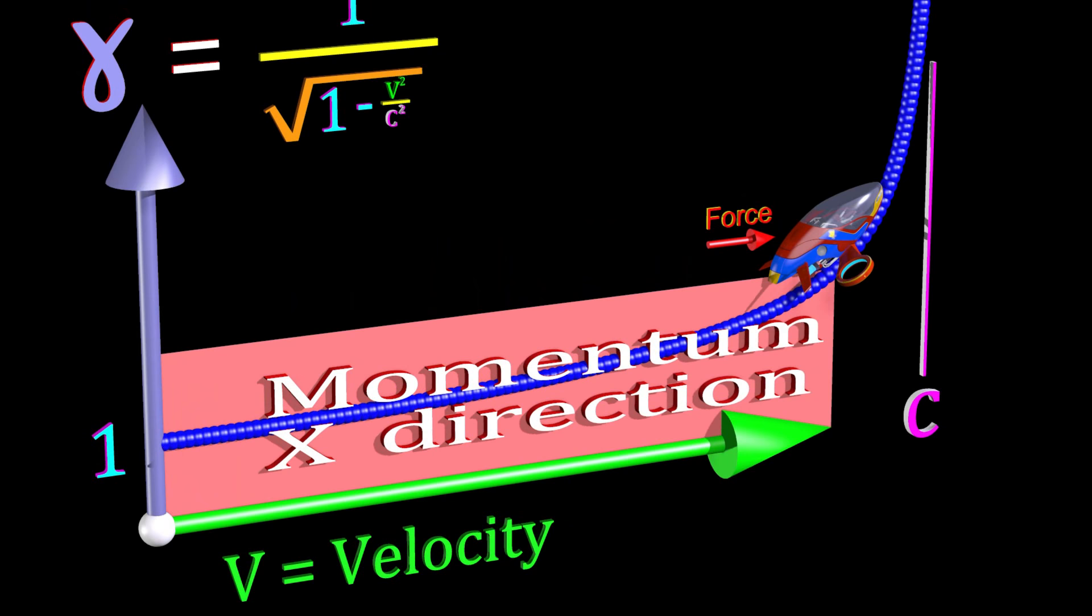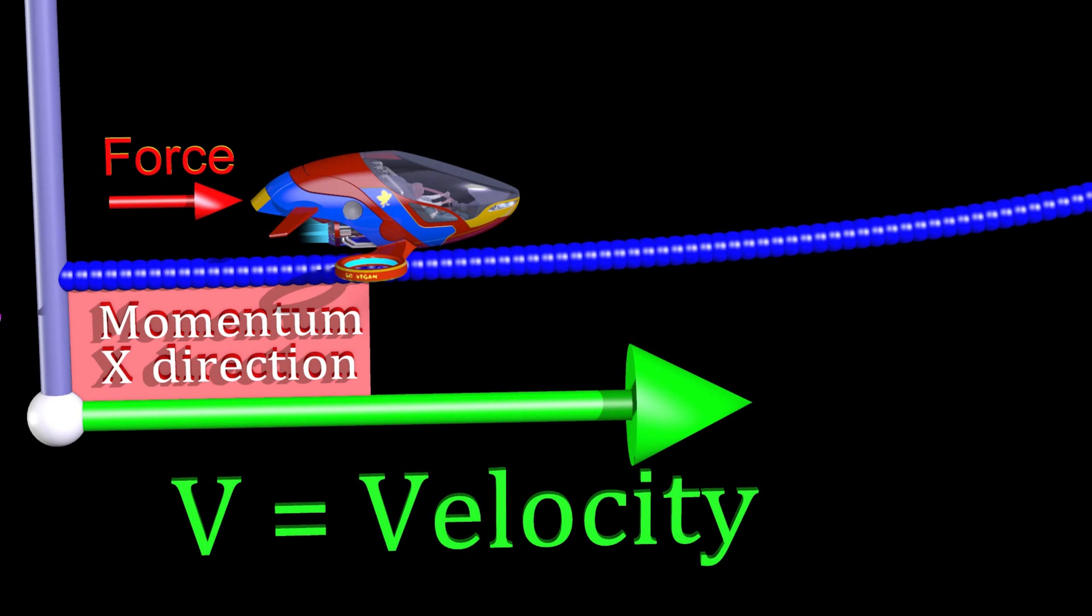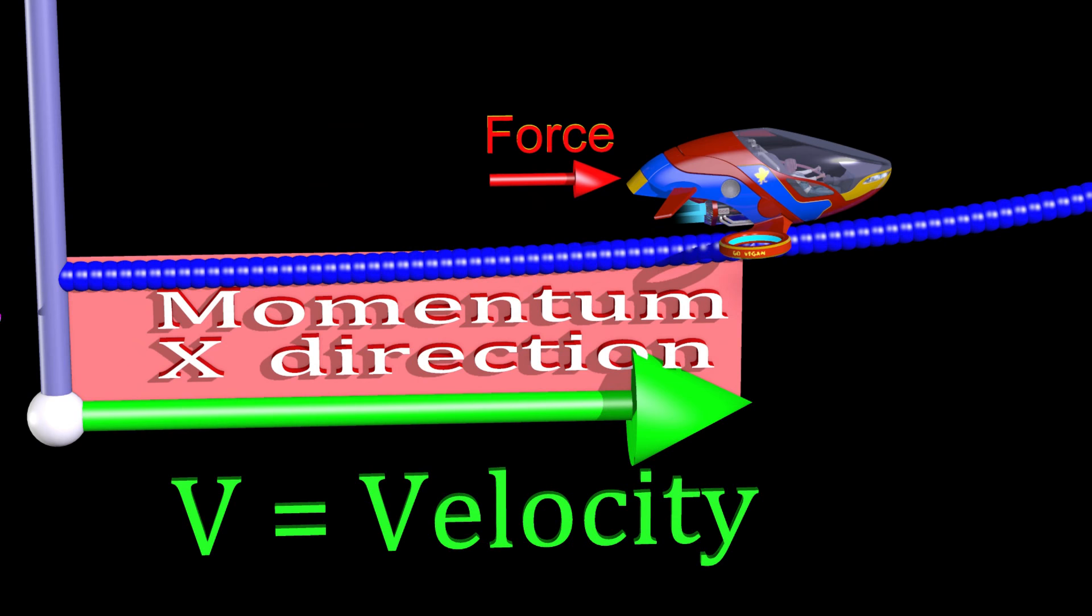At speeds far below the speed of light, gamma is approximately equal to 1, and the rectangle's area changes at a constant rate by having the velocity change at approximately a constant rate.